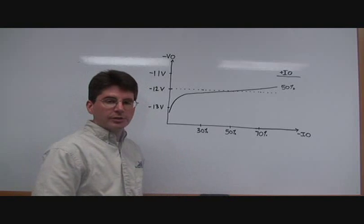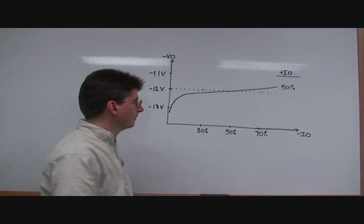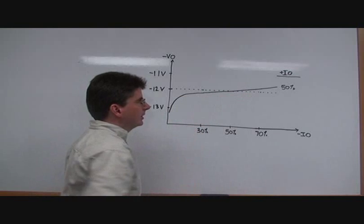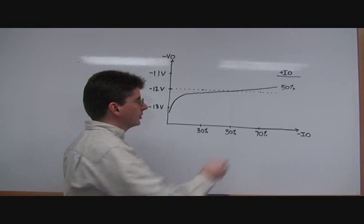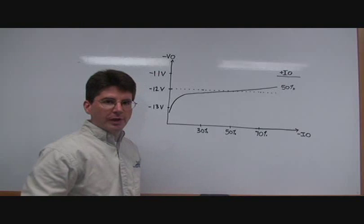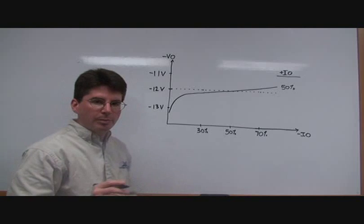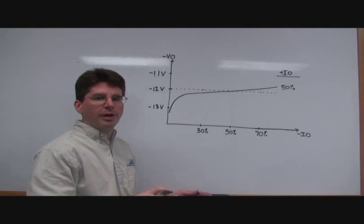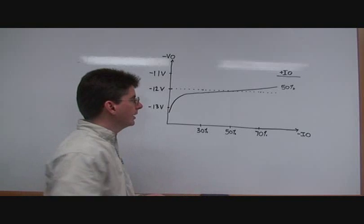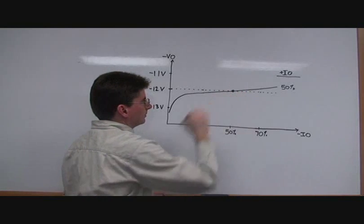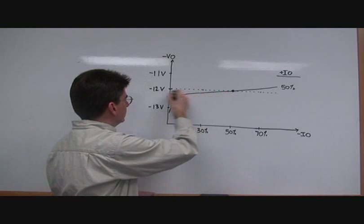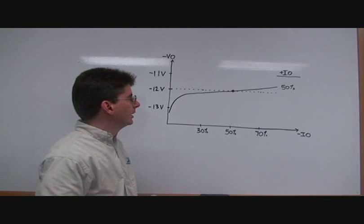And this dark trace here is for the 50% loading condition on the positive output. So for the balanced load case, 50% on the positive and 50% on the negative is shown here. And you can see this is 12 volts. The negative output is well regulated.